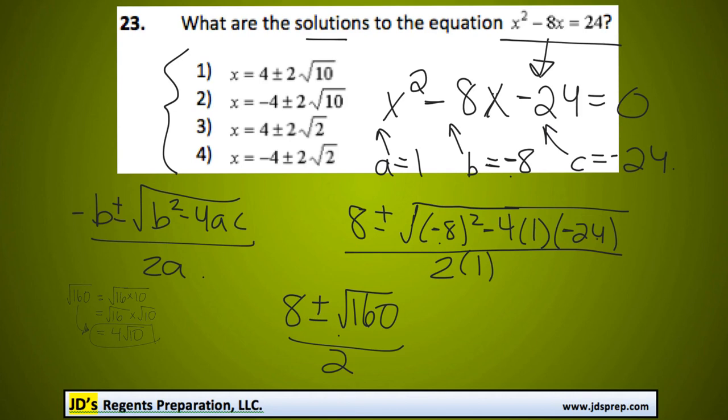Moving back to where we were, now that we know that, I can write this as 8 plus or minus 4 root 10 over 2. And you'll notice that we can divide both of these by 2, and it'll become 4 plus or minus 2 root 10.